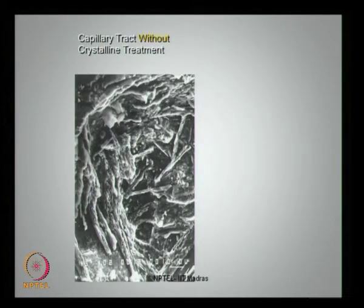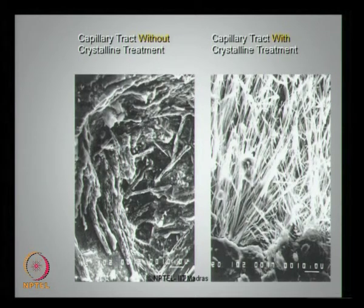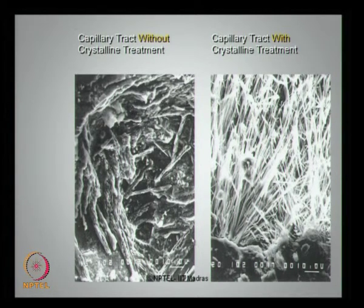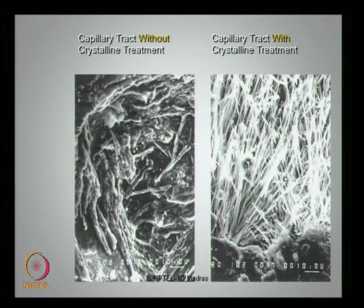If you look at the photograph of a capillary tract without crystalline treatment and a capillary tract with crystalline treatment, you can see a phenomenal difference, shot in close view with a scanning electron microscope, which shows that crystalline treatment ensures impermeability. It makes concrete completely impermeable and all the pores and voids possibly present in concrete are gradually filled up with the permanent formation of chemical — which is the most important focus here.